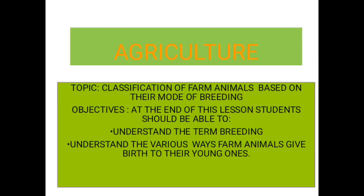In the last class we talked about farm animals and their habitats. We classified them according to their habitat, and at this point we're going to be talking about them in their mode of breeding. When you hear the word breeding, what comes to your mind? Breeding simply means the way by which farm animals produce their young ones. At the end of this class you should be able to define the term breeding and also understand the various ways farm animals give birth to their young ones.